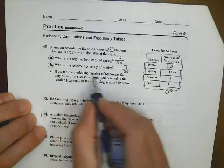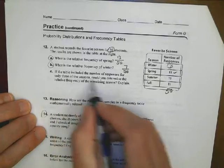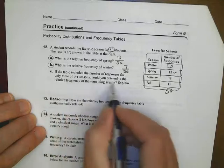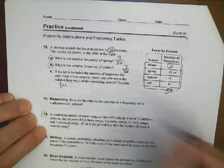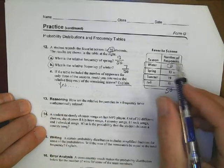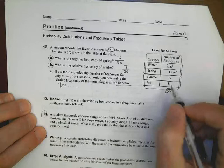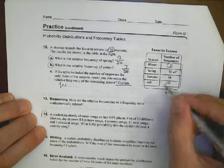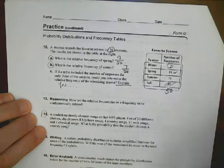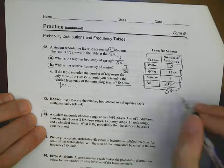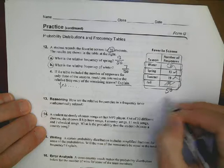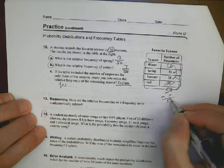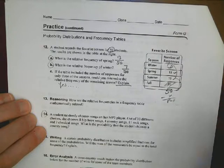It says that the table included the number of responses for only 3 of the seasons. Could you determine the relative frequency of the remaining seasons? The answer actually would be yes, and here's why, and you'll want to write down and explain why. If they told you there was 50 people, and they didn't tell you fall, for example. They didn't give you that number. Could you figure out what number is missing? Sure you could. You could add these up, and then subtract that, and that would give you whatever fall is. That gives you the remaining numbers, because you know the total is 50, so you could figure out what is missing.